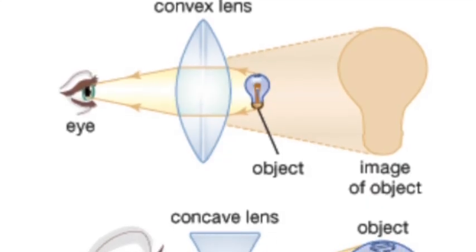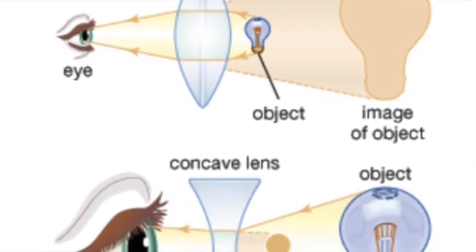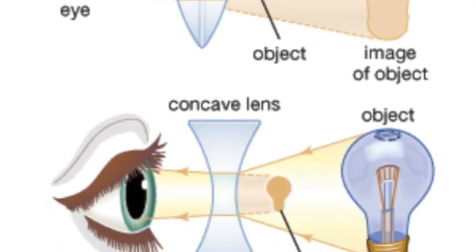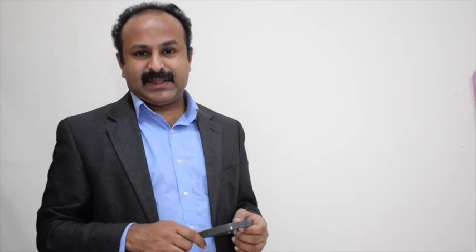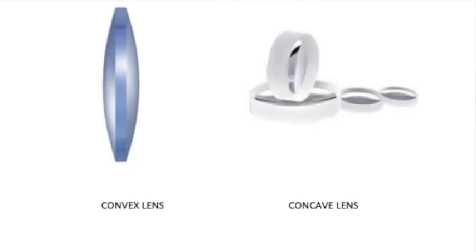Convex and concave lenses have opposite properties. A convex lens is used as a magnifying glass, but if you look through a concave lens the image appears diminished — smaller. To identify them: a convex lens is thick at the center and thin at the sides, while a concave lens is thin at the center and thick at the sides. The power of a convex lens is positive and the power of a concave lens is negative.